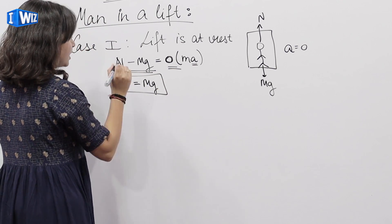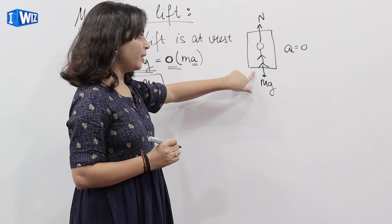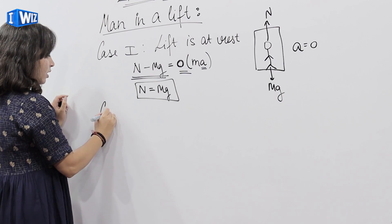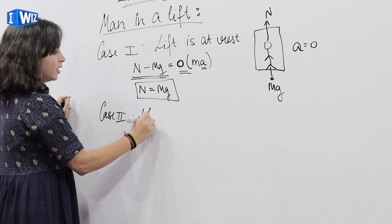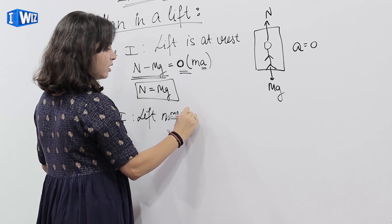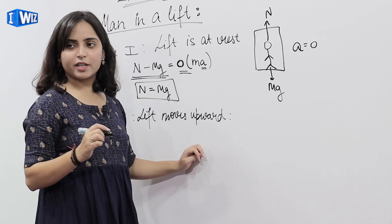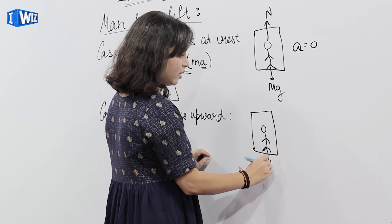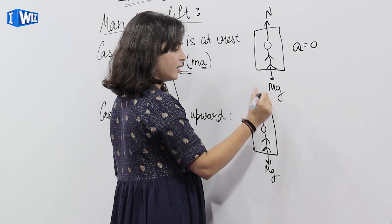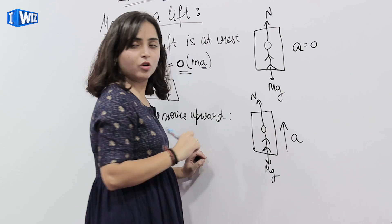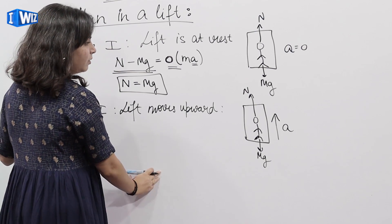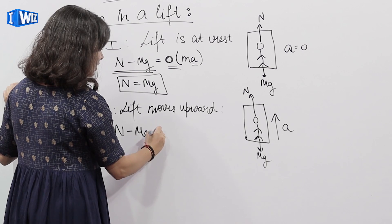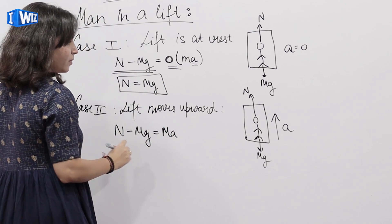So N is equals to MG — that means जितना force man lift की surface पर लगा रहा है, उतना ही force surface man पर लगा रही है. Normal reaction is equals to MG. Case 2 — lift moves upward. अब lift क्या करी है — उपर जा रही है. Again MG, normal reaction, and अब lift accelerating upwards है. तो equation लिखते हैं — N minus MG is equals to M × acceleration.